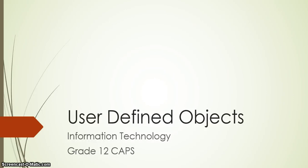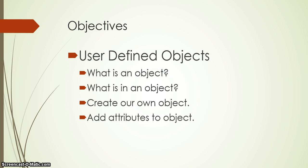Today we are going to be talking about user-defined objects, and this is part of the Information Technology Grade 12 CAP syllabus. In this lesson, which is part one, we're going to look at what is an object, what are the things we can put into objects, and how we can create one. Some of the things you can put in an object are attributes, and we will start by putting attributes into the object we create.